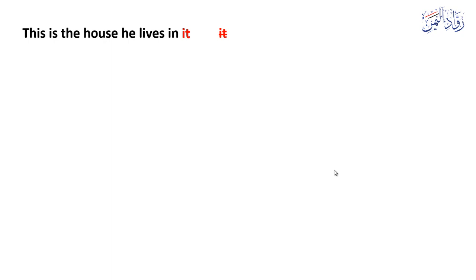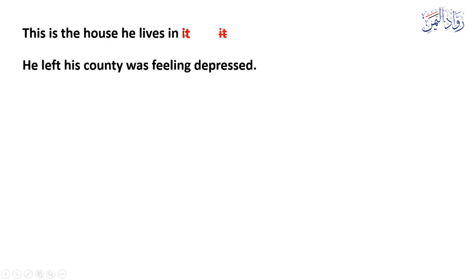'This is the house. He lives in it.' The mistake is 'it'. When we combine two sentences — 'This is the house' and 'He lives in the house / in it' — we don't need to repeat the pronoun, because it refers back to 'the house'. So the correct sentence is: 'This is the house he lives in.'